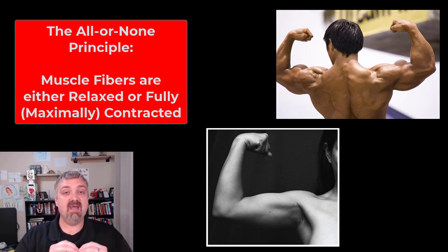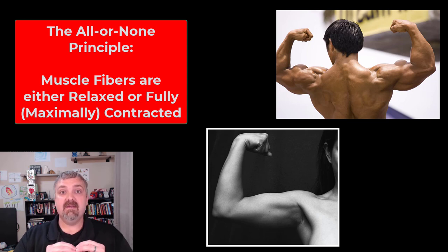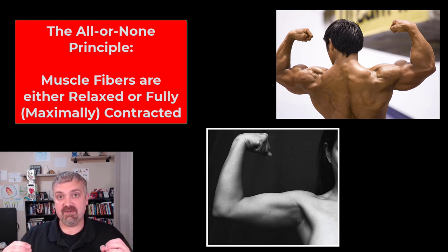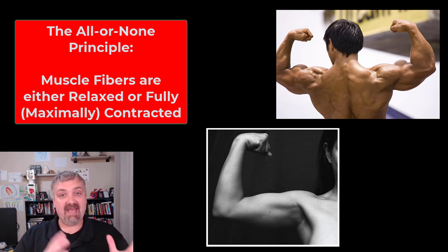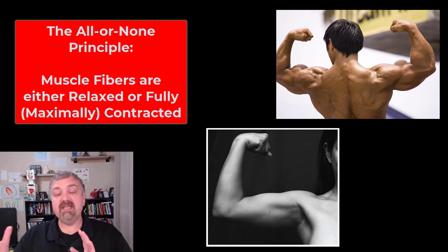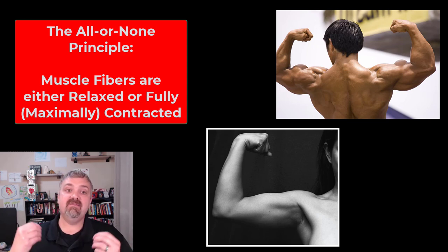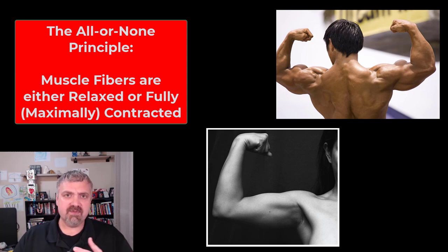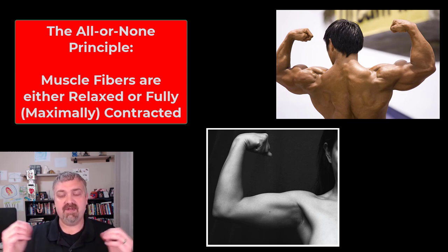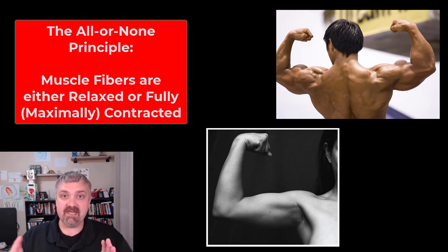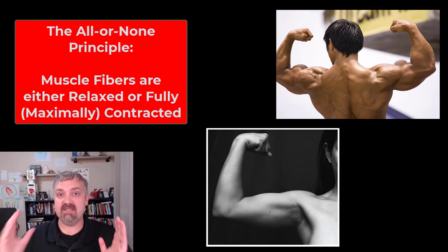Individual muscles are going to be made up of individual muscle cells, also known as muscle fibers. Each of these muscle fibers is either relaxed or fully contracted, and that's the idea of the all or none principle. We talk about it a lot more with nerves, with neurons, but the all or none principle works here as well. An individual muscle fiber is either fully contracted or it's not.